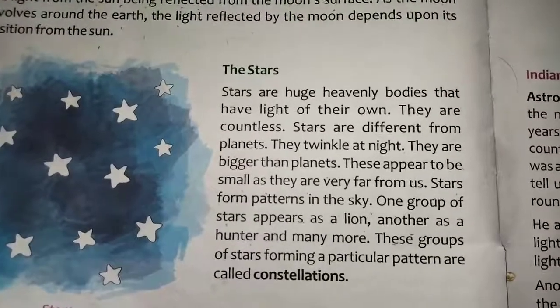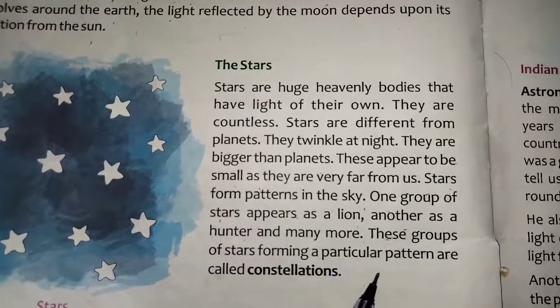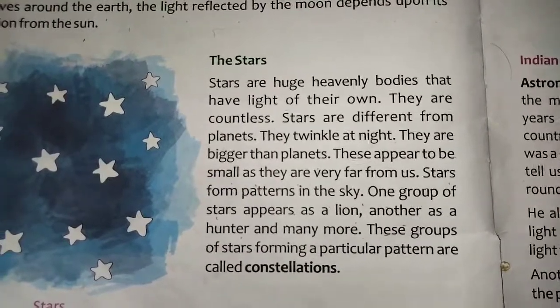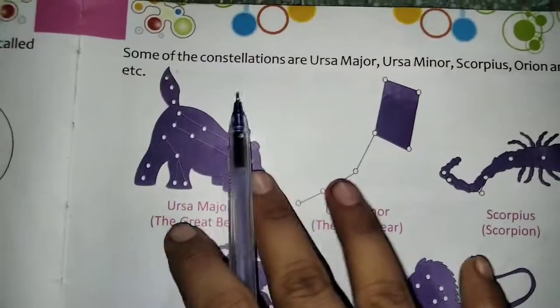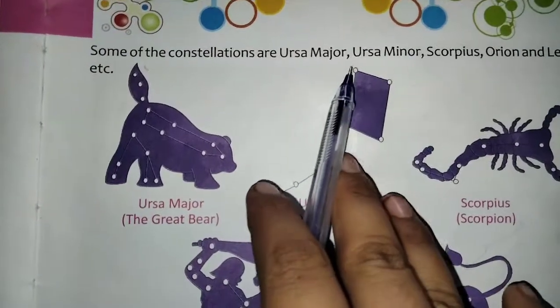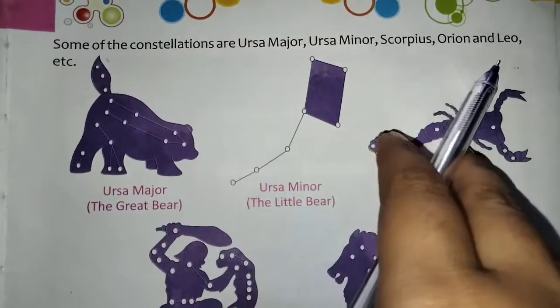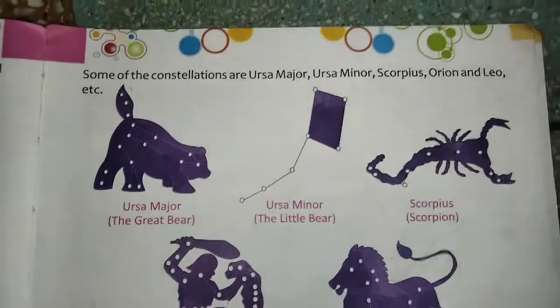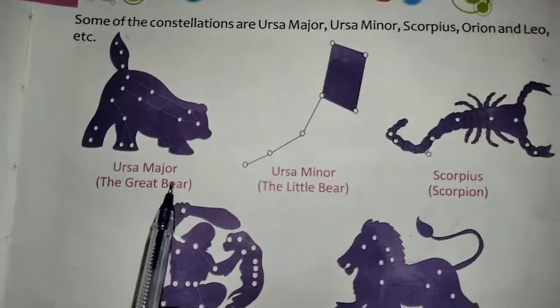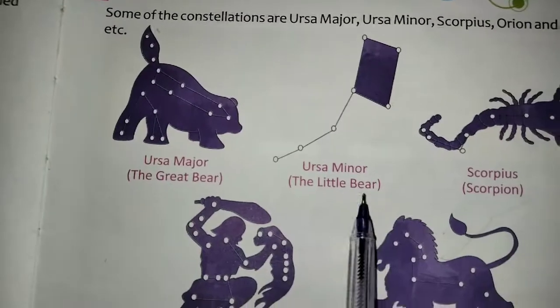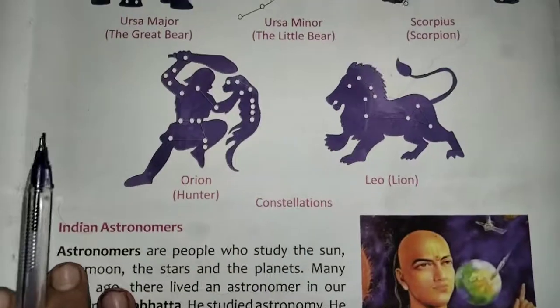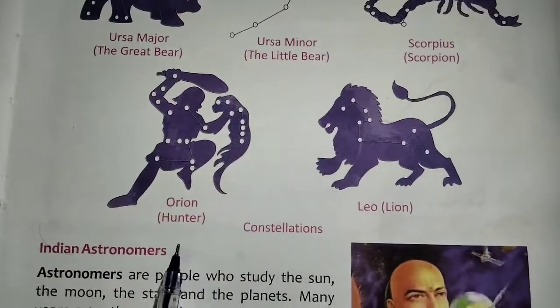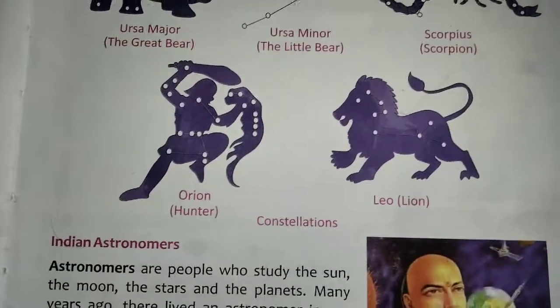These groups of stars forming a particular pattern are called constellations. Some of the constellations are Ursa Major, Ursa Minor, Scorpius, Orion, and Leo. Ursa Major is the great bear, Ursa Minor is the little bear, Orion looks like a hunter, and Leo looks like a lion.